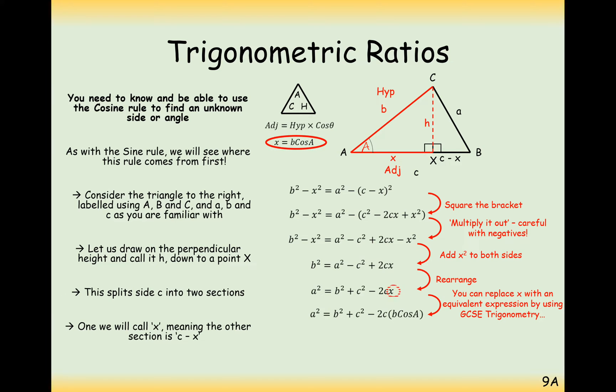So here we get our final answer and the final version of the cosine rule which is A squared equals B squared plus C squared minus 2BC cos A. So this here helps us link three sides to an angle or two sides and an angle to another side.